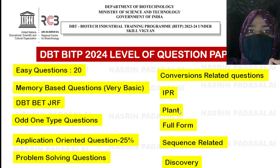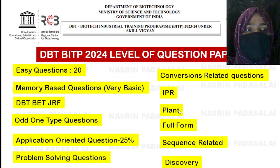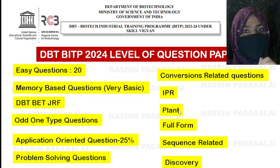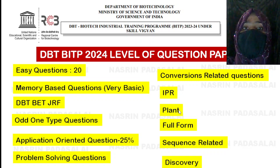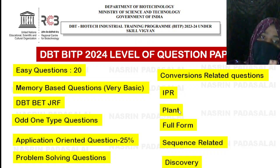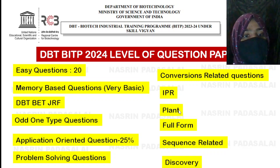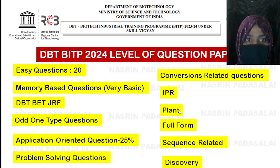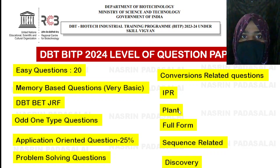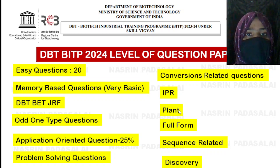You can find questions that are repeated from the DBT BITP examination syllabus, because both the BET examination and BITP examination are conducted by the Department of Biotechnology. So you can expect many repeated questions from DBT. If you are preparing for DBT BITP, focus on questions asked in DBT BET examination, because for DBT BITP they don't release previous year questions, whereas for DBT BET last five to ten years' questions are available. At this point, refer to the last five years of DBT BET questions.